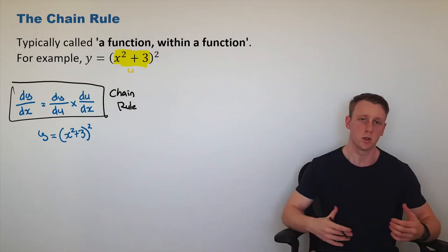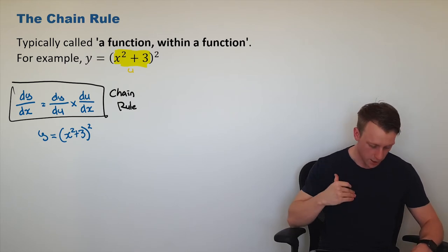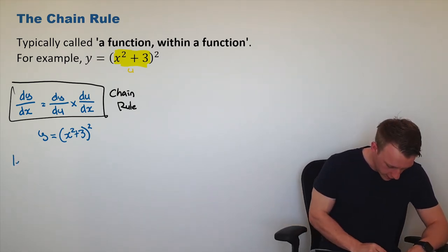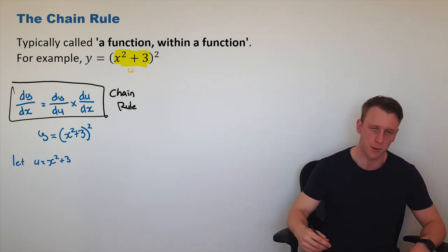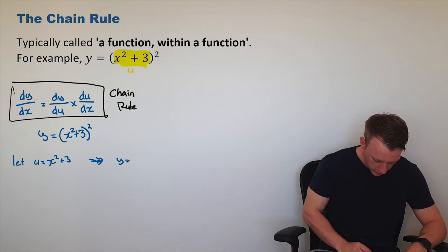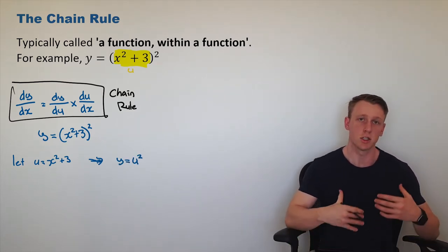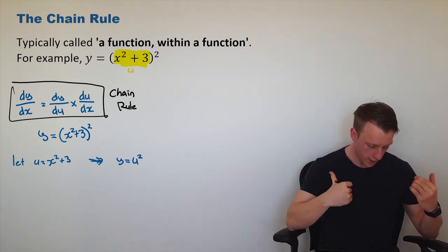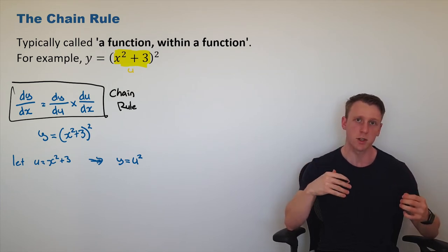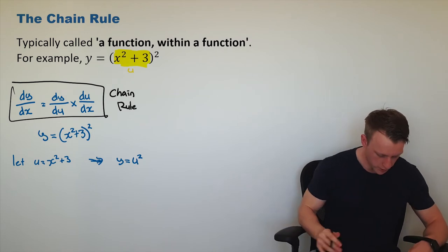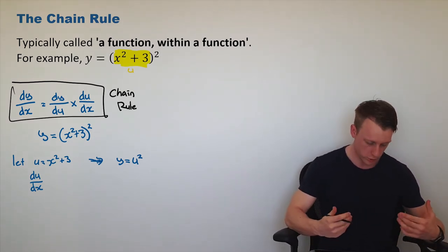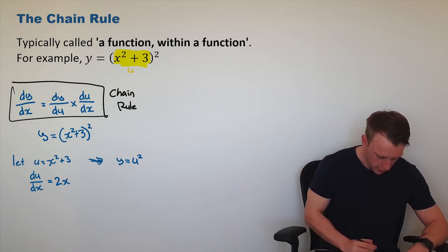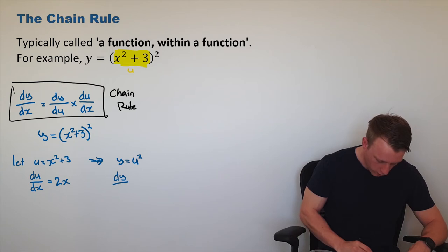Let's apply it. Suppose we want to differentiate this function. The way we set this up: we can see we've got that variable u, so I'm going to say let u equal the inside function, which in this case is x squared plus 3. This implies that y equals u squared, where I just replace that inner function with u. Now respectively I can differentiate these individually. For u equals x squared plus 3, I differentiate u with respect to x — that's du/dx — and applying the power rule I get 2x. I can do the same for y: dy/du, the derivative of y with respect to u, is 2u.